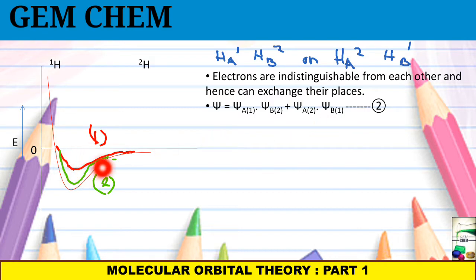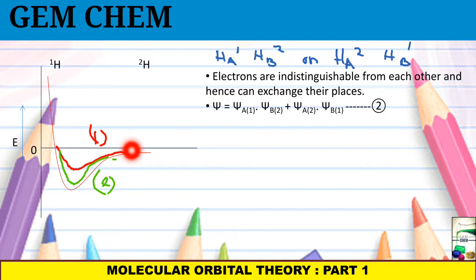From plot 2 we can see there is some improvement, and the stabilization is due to the process of electron exchange. In graph 1, the indistinguishability of electrons is not accounted for. As we go to graph 2, stability increases because there is an exchange taking place between the electrons, which can be measured in terms of exchange energy.